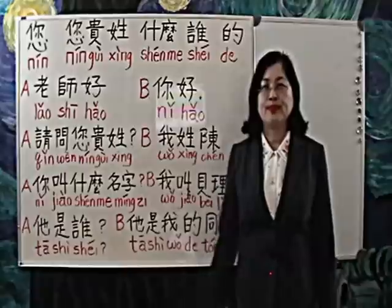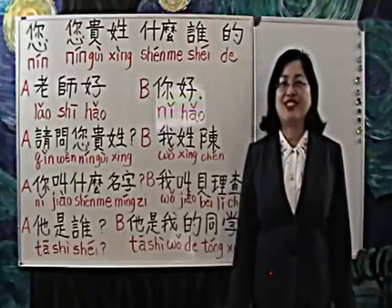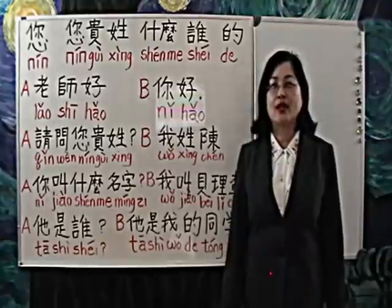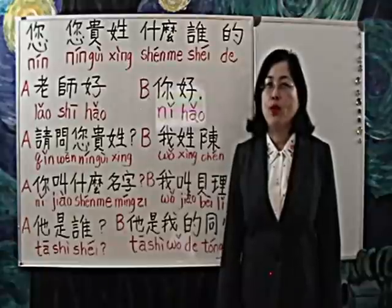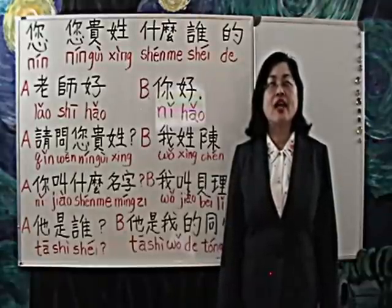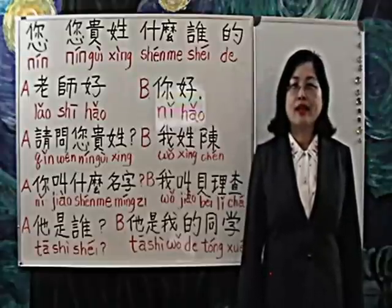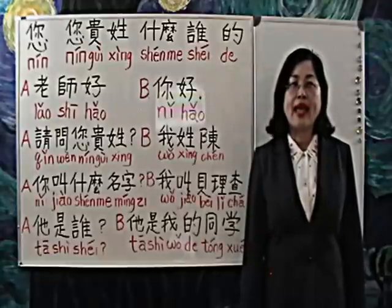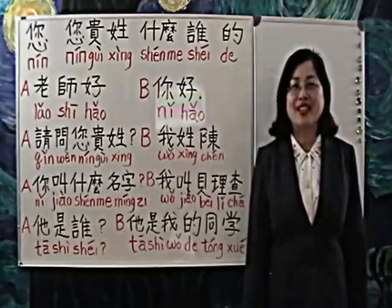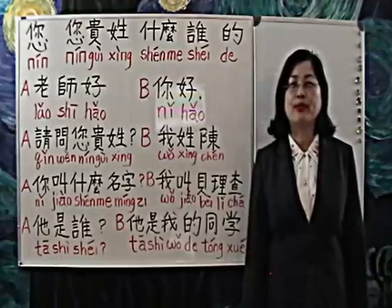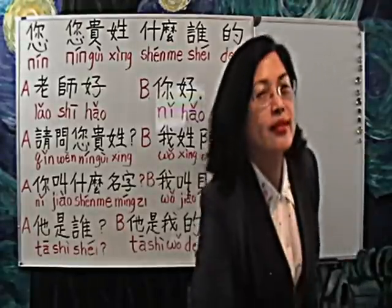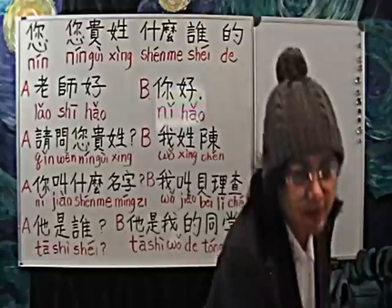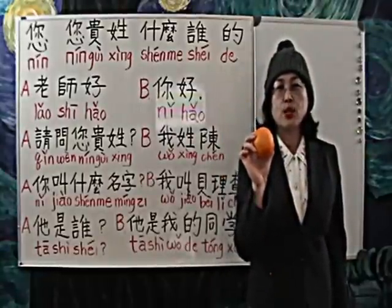什么 means 'what' in English. 什么 can be used in two ways. First, as a pronoun to ask what something is. Remember, the word order is exactly the same as in a non-question statement. Therefore, when learning to make a question sentence, you can start with a statement and then replace the part in question with the appropriate interrogative pronoun. For example, 这是什么? 这是帽子。 这是什么? 这是橘子。